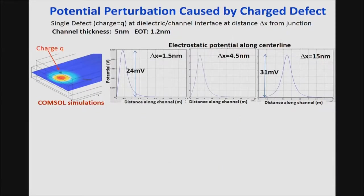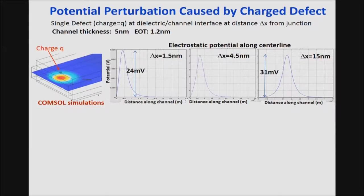In the presence of defects, it is important to understand the perturbation to the potential experienced by tunneling electrons associated with a defect at the interface between the oxide and the channel. We show calculations based on COMSOL for a planar double-gate structure with a channel thickness of 5 nanometers and effective oxide thickness of 1.2 nanometers. The overall electrostatic potential variation is very large — more than 30 millivolts within the center of the channel from a single electron charge sitting in a trap.